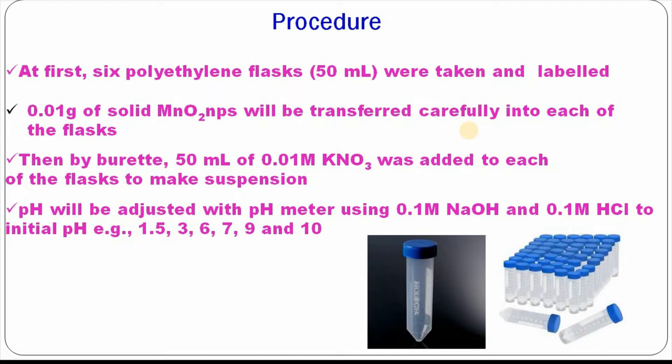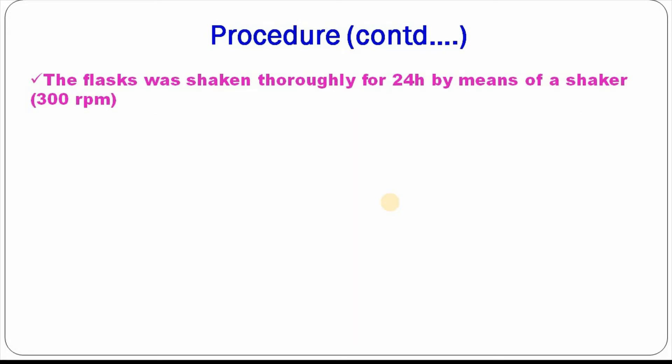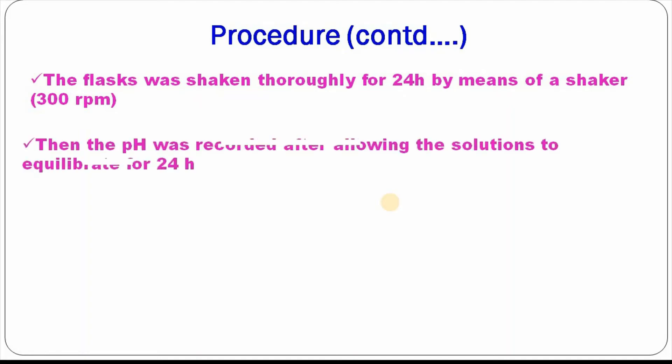pH was adjusted with a pH meter using 0.1 molar HNO₃ and 0.1 molar KOH to initial pH values — for example, 1.5, 3, 6, 7, 9, and 10. Then, the flask was shaken thoroughly for 24 hours by means of an orbital shaker. Then, the pH was recorded after allowing the solutions to equilibrate for 24 hours.